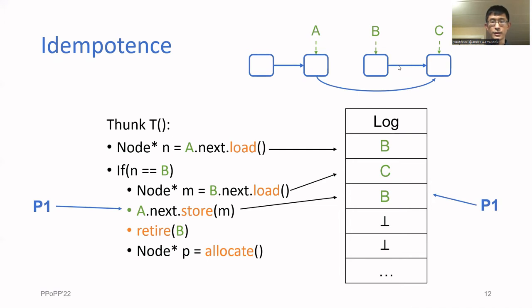Now let's say P1 pauses at this point. In another process, P2 starts executing the thunk. For the first two load operations, P2 will just use the values from the log. This is important because it means that P2 will follow the exact same branches as P1, even though the state of memory has already changed. Now for the store operation, P2 sees that A.next is no longer equal to whatever is stored in the log, so it concludes that the store has already happened and it doesn't have to do anything.